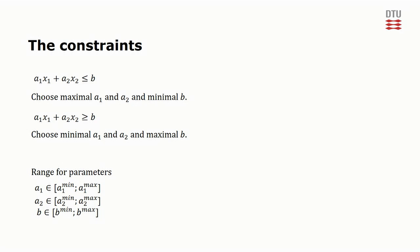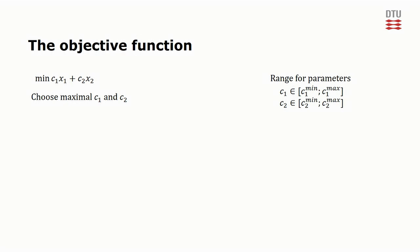Robust optimization can also be used to analyze the objective function. Here the idea is to give the most conservative guess on the optimal objective value. If we for example want to minimize this objective with these ranges for the parameters c1 and c2, we would choose to use c1 max and c2 max to get the most conservative guess on the objective value. If we wanted to maximize the objective, we would of course use c1 min and c2 min.